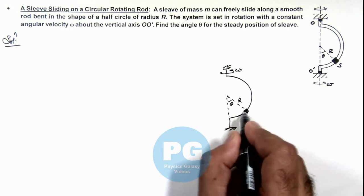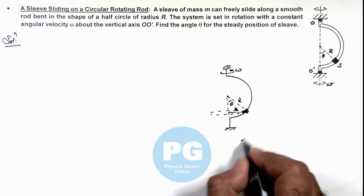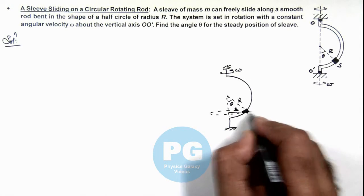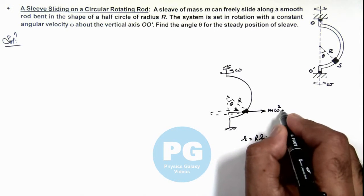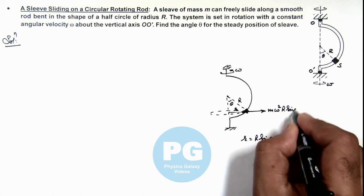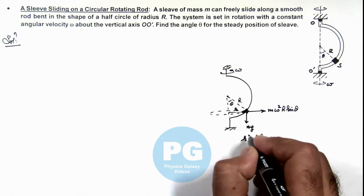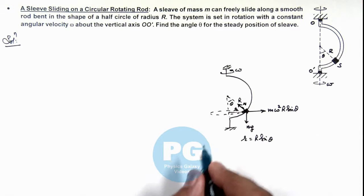The sleeve would also be revolving in a circular path of radius r which is given as R sin θ. It would be experiencing an outward centrifugal force mω²R sin θ. Downward, it is experiencing mg, its weight. A normal reaction would be acting onto it which will be in the direction towards the center.